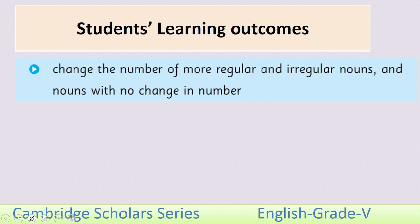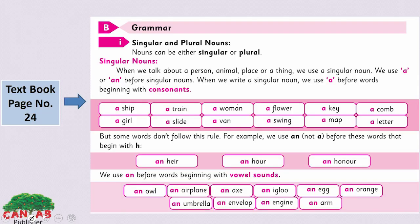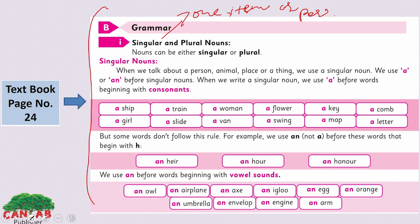The SLOs of this lesson are: change the number of more regular and irregular nouns and nouns with no change in number. Now look at page number 24 of your textbook. We have a grammar section of singular and plural nouns here. I hope you know about singular and plural nouns because we have also learned these in our previous class. Singular indicates to one item or one person, and plural indicates to more than one item or person.